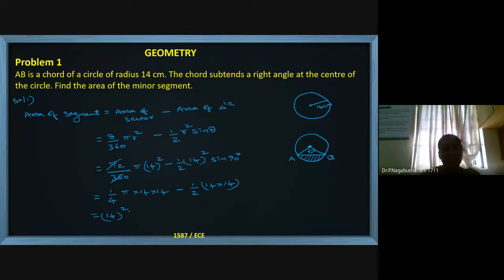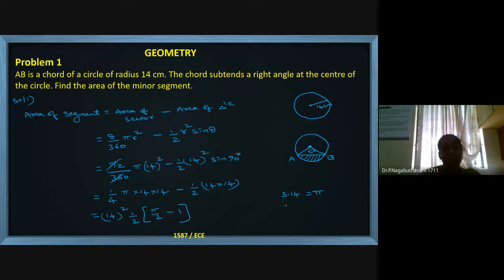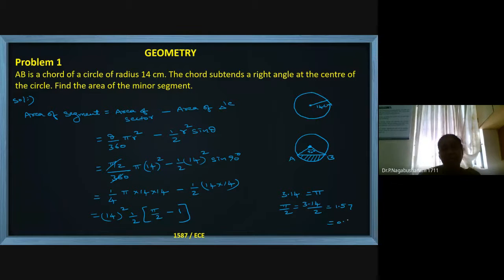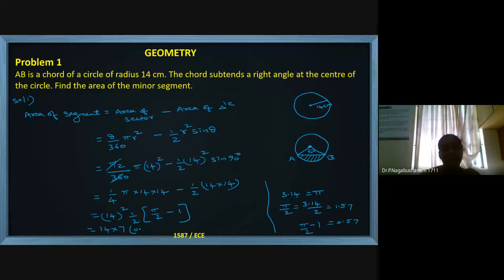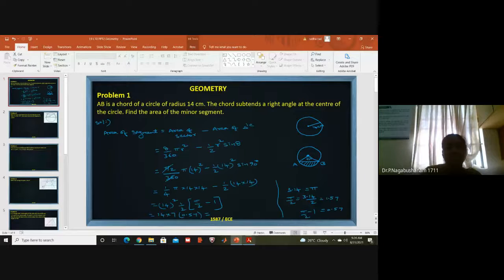Taking 14² and half as common factors, we are left with π/2 minus 1. π means 3.14, so π/2 equals 1.57. Then 1.57 minus 1 equals 0.57. So π/2 minus 1 equals 0.57. Now multiply: cancel the 2, leaving 7, then multiply by 0.57 to get the final answer.